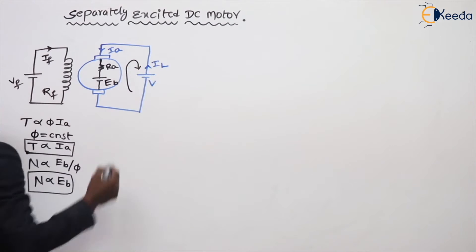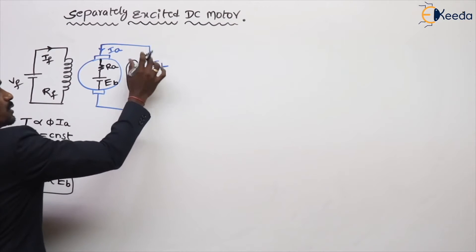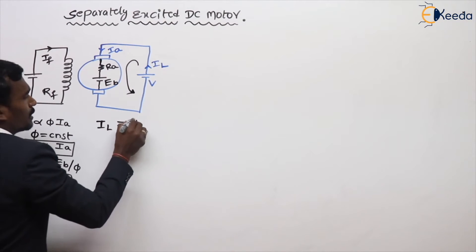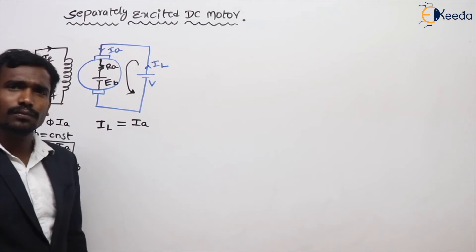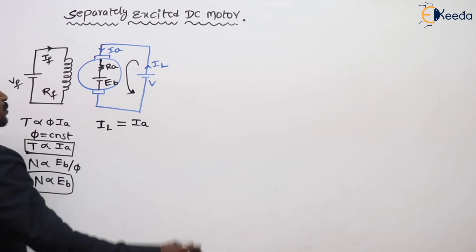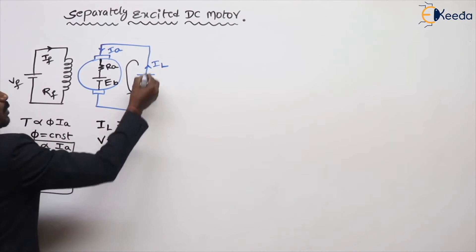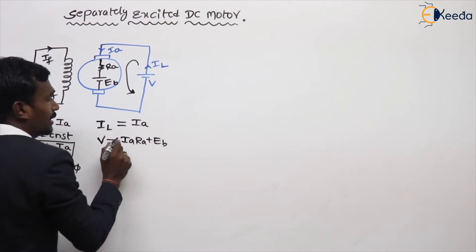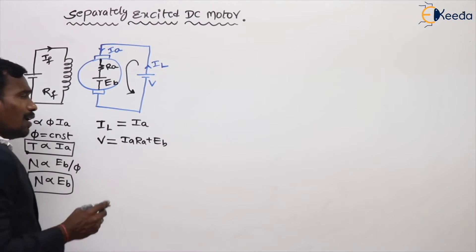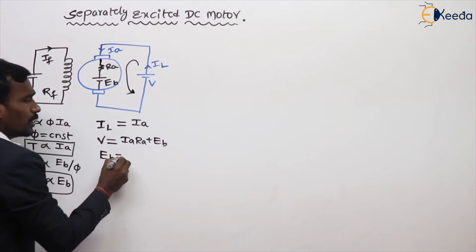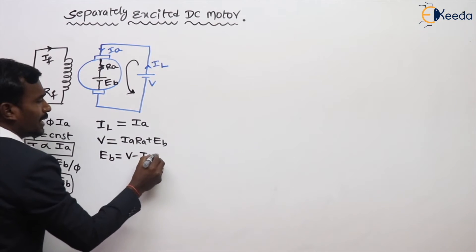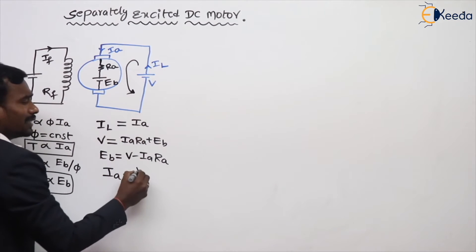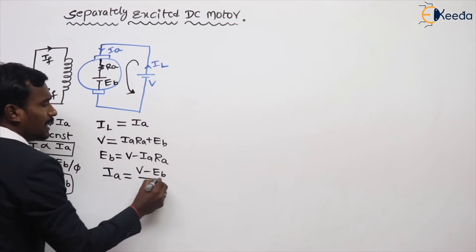What is the current equation? The current flows from IL to IA, so IL equals IA. The voltage equation is: V equals IA·RA plus Eb. From this, Eb equals V minus IA·RA, and IA equals V minus Eb, divided by RA. These are the current and voltage equations.